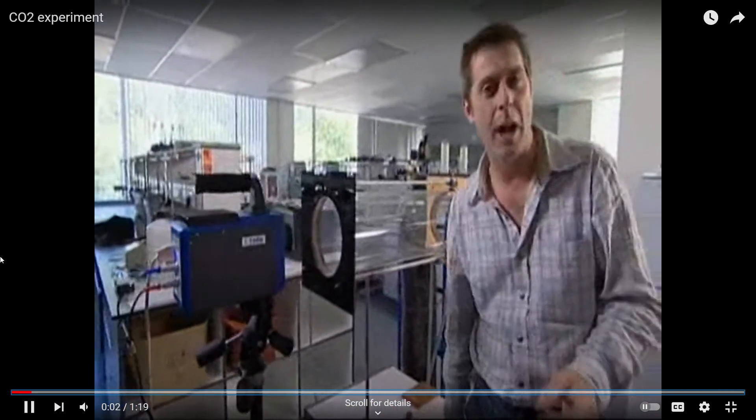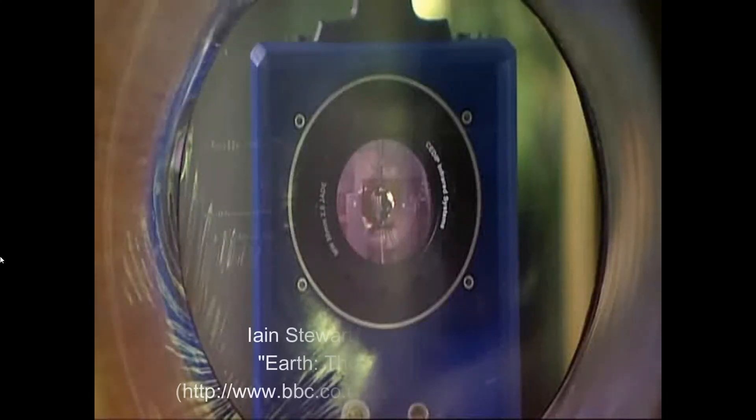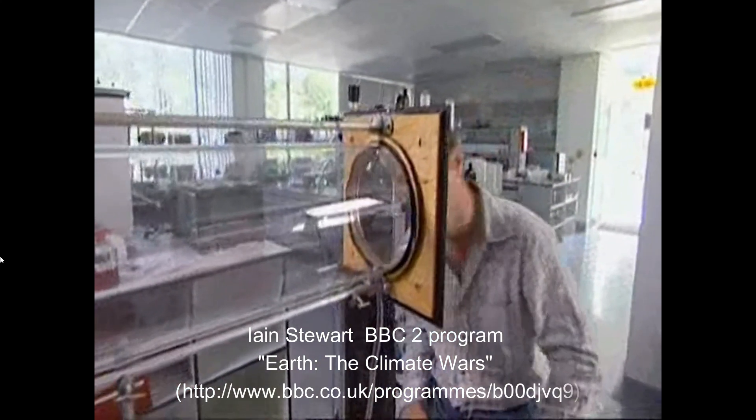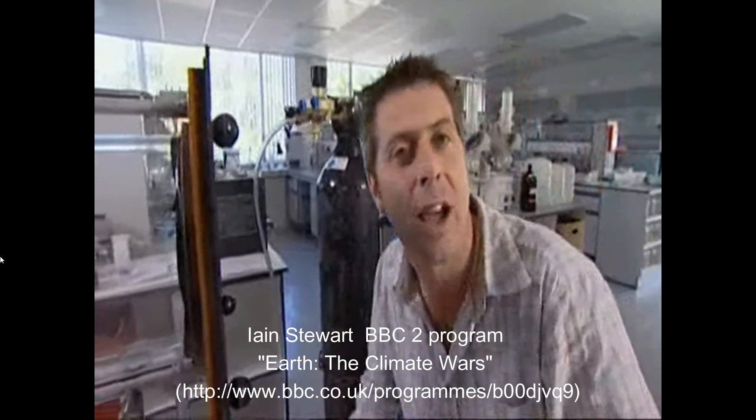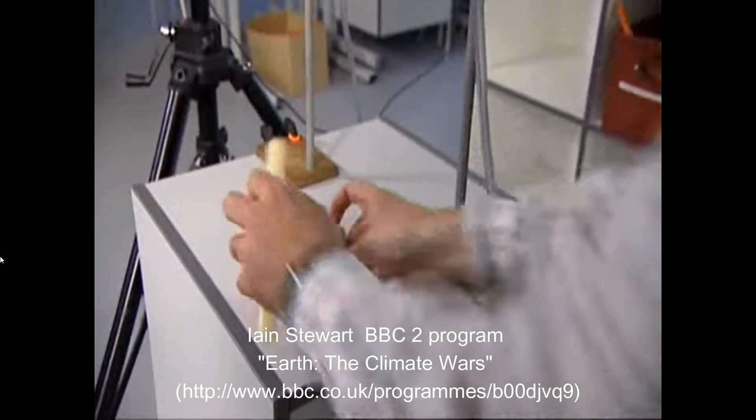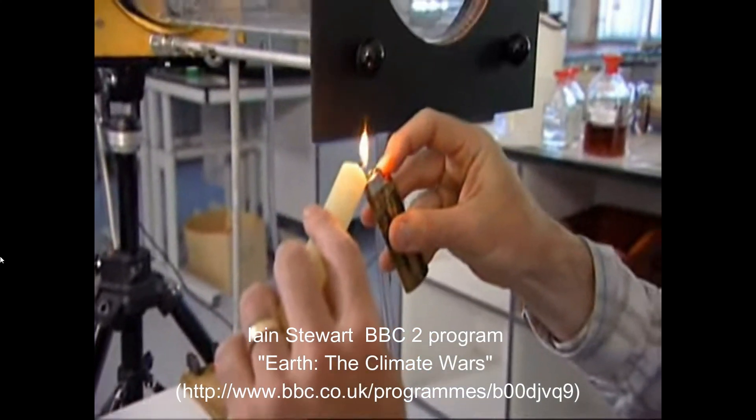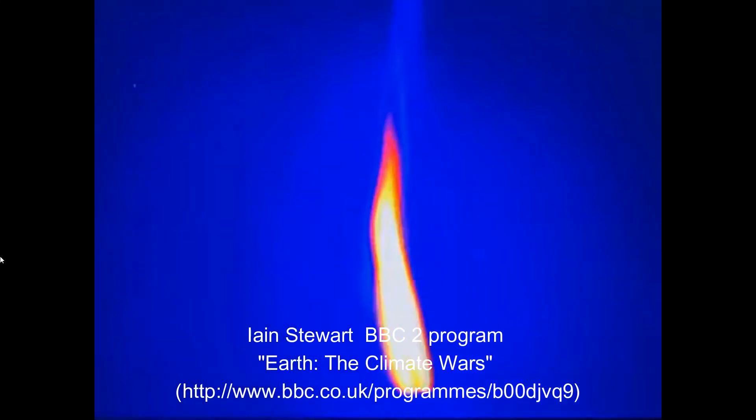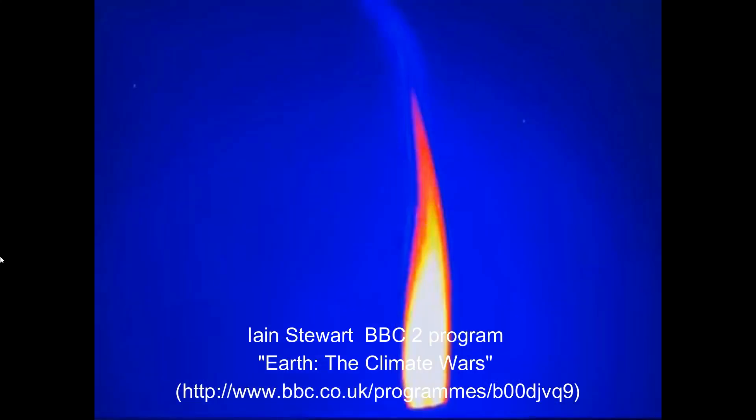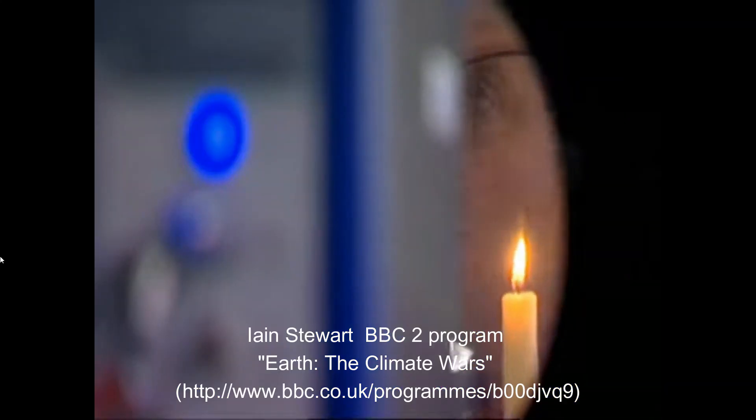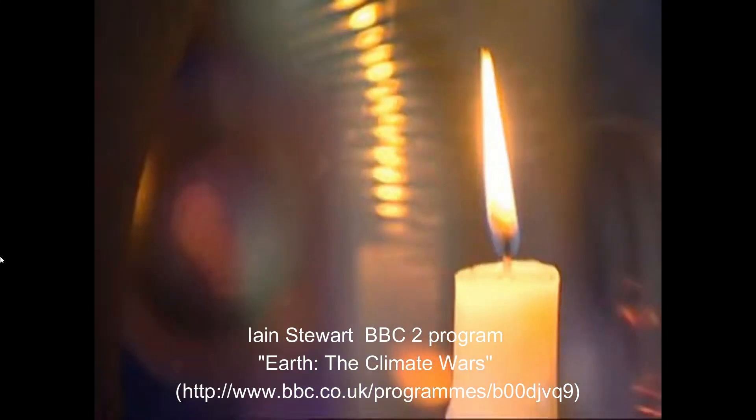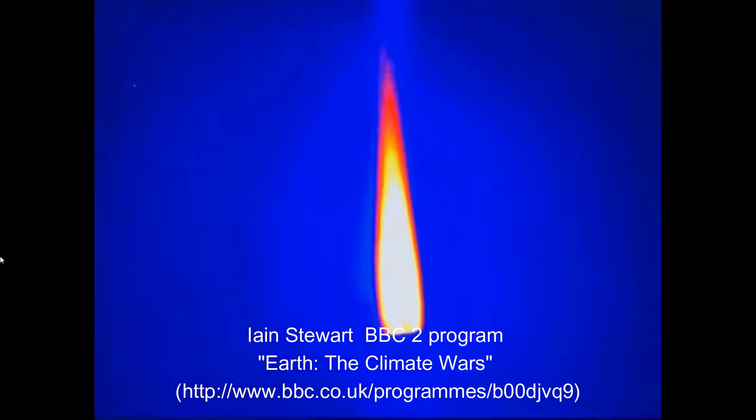I can show you how carbon dioxide affects our climate using this heat sensor of our infrared camera which is pouring away here. A candle, this glass tube, which is hooked up to this rather large canister of carbon dioxide gas. Now if I light the candle, you'll see that on the monitor, the camera picks up the flame perfectly. Look at that, the hottest parts are glowing white. Now watch what happens when I turn on the carbon dioxide.